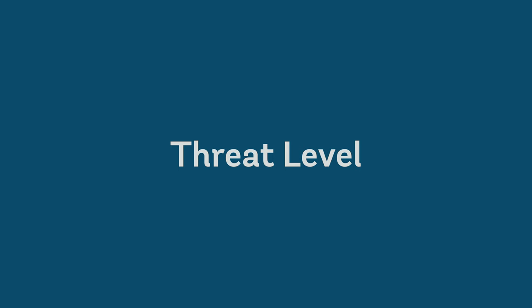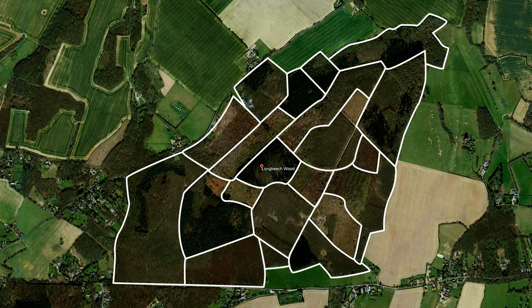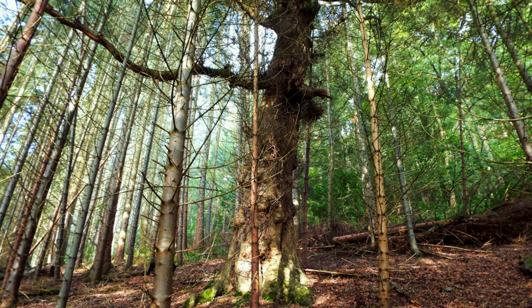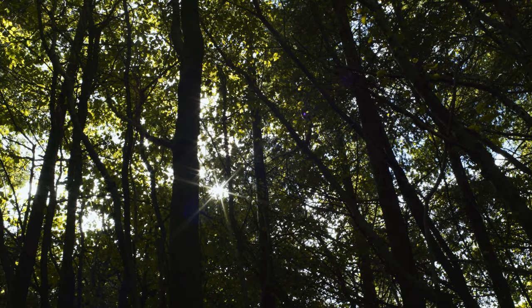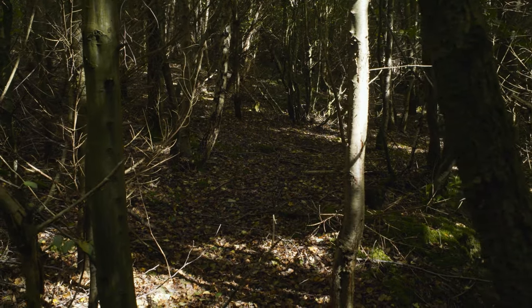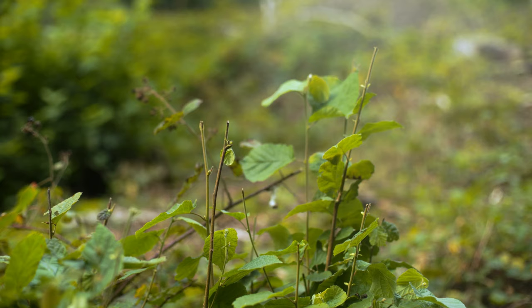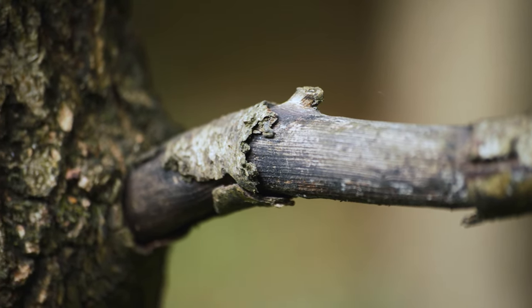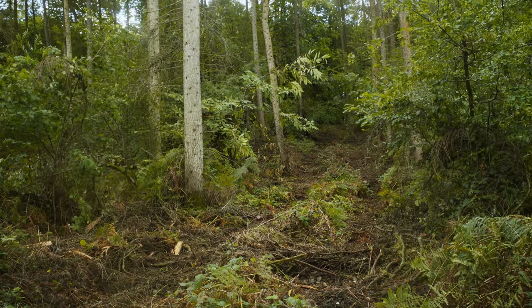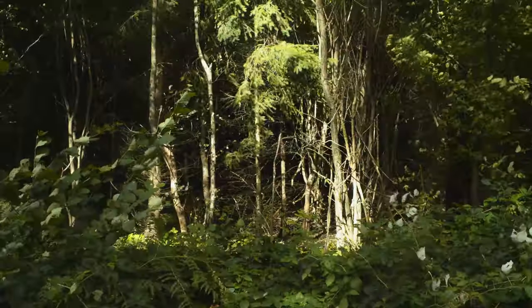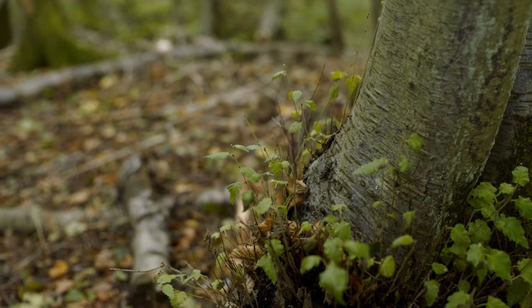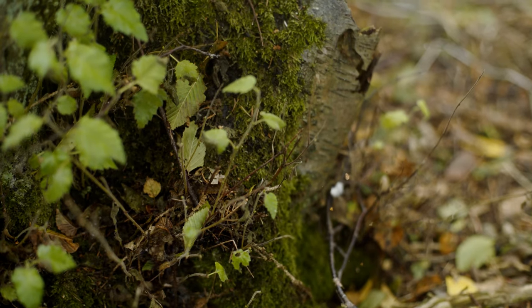For each zone, the threat level must be determined and recorded. This is based on the worst condition of any single feature — so if one veteran relic native tree is critical, then that entire zone is recorded as critical. Threats include excessive shade from non-native trees, prolonged and heavy browsing by deer or livestock, significant pests and diseases, or other impacts such as ground disturbance and previous damage. Each of these threats may need different management approaches, but all can be categorised according to their impact in the same way.